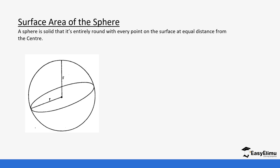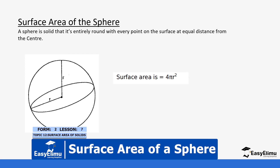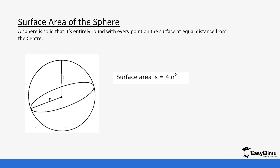A sphere is a solid that is entirely round, with every point on the surface at an equal distance from the center. When we calculate the surface area of a sphere, we use the formula 4πr². This is the easiest of all the surface area formulas for the solids we have discussed, because the formula is very direct — the work is simply to apply that formula correctly.